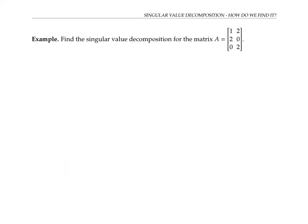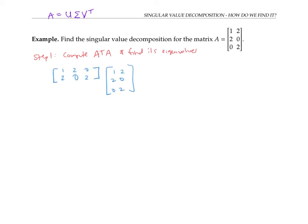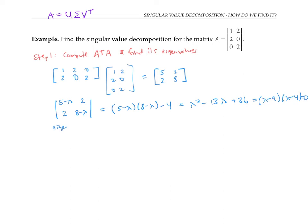Let's do an example and find the singular value decomposition for this three by two matrix. Step one: compute A transpose A and find its eigenvalues. A transpose A is a two by two symmetric matrix. Writing down the characteristic polynomial — the determinant of the matrix with entries five minus lambda, two, two, eight minus lambda — gives lambda squared minus 13 lambda plus 36. Factoring and setting equal to zero, the eigenvalues of A transpose A are lambda one equals nine and lambda two equals four. So I can write down my diagonal matrix sigma, which is a three by two matrix, with diagonal entries being the square roots: three and two.